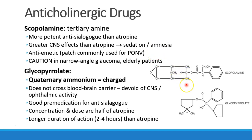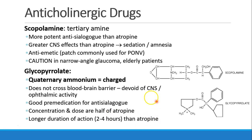Glycopyrrolate, or Robinul, is a quaternary ammonium and is charged. Therefore, it doesn't cross the blood-brain barrier — there's no CNS activity and no ophthalmic activity. It's still an antisialogogue and can be used as a pre-medication for that purpose. The concentration of glycopyrrolate in the vial is usually half that of atropine, and the dose is also usually half that of atropine. It has a longer duration of action than atropine, as much as two to four hours.